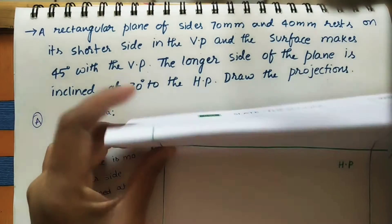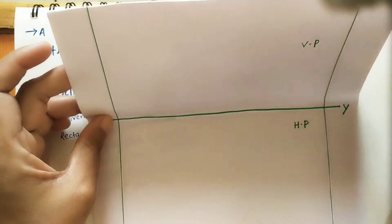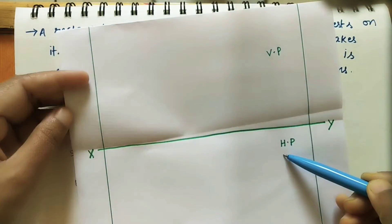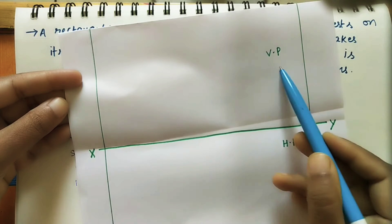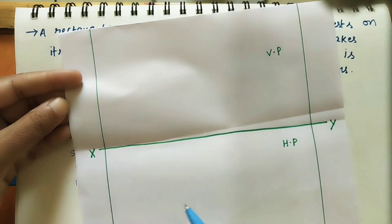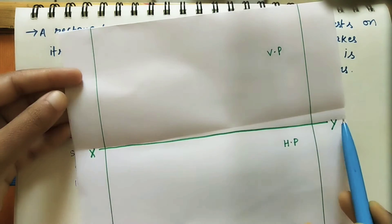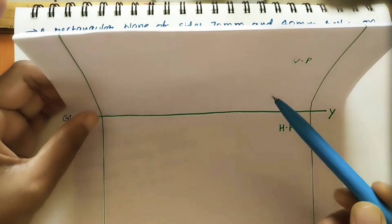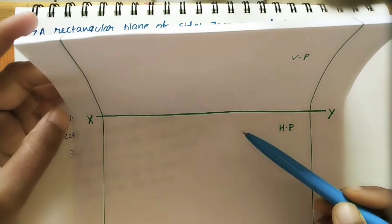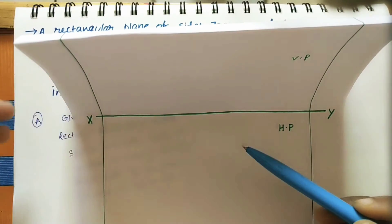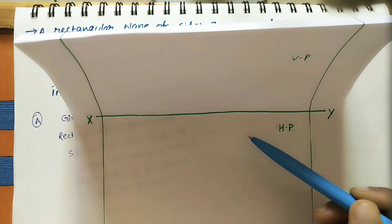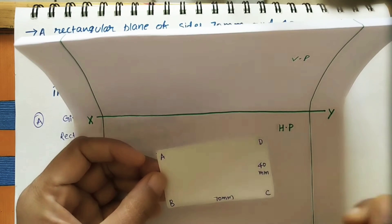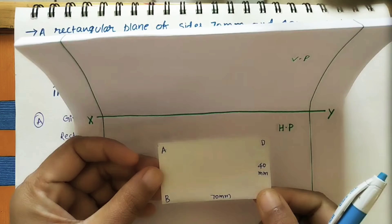Take the first quadrant. This is the vertical plane (VP), this is the horizontal plane (HP), and the line joining both planes is the reference line — we call it the XY line. The angle between the VP and HP is 90 degrees. All planes we consider are in the first quadrant.